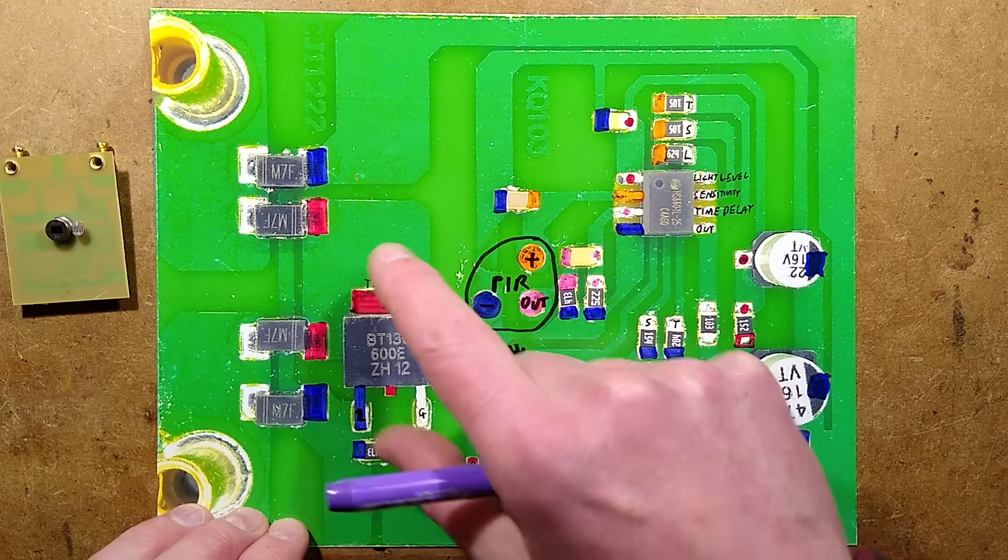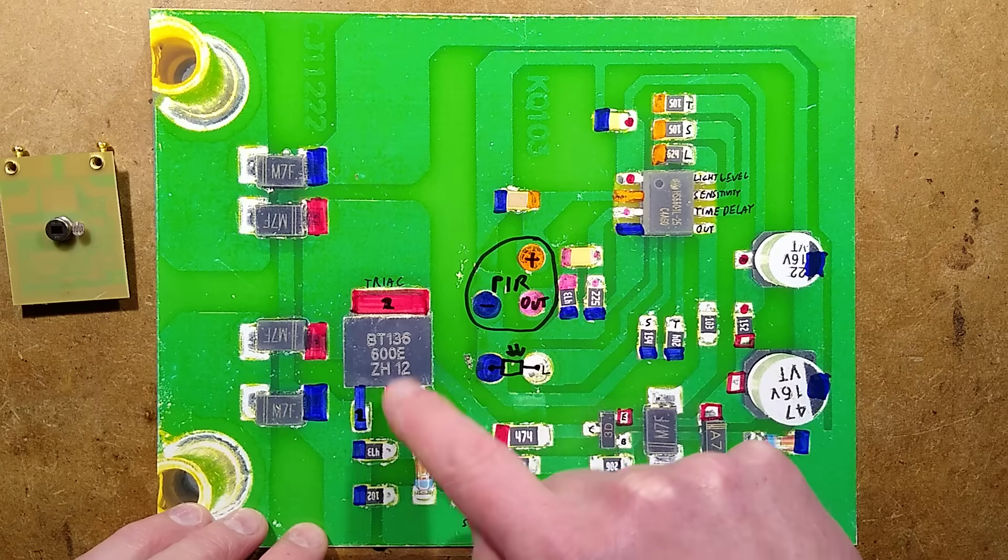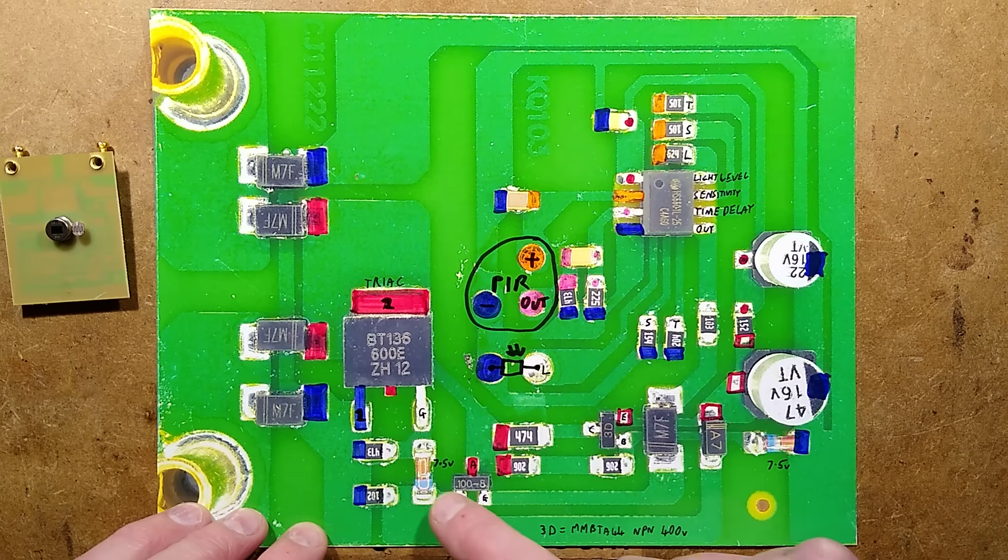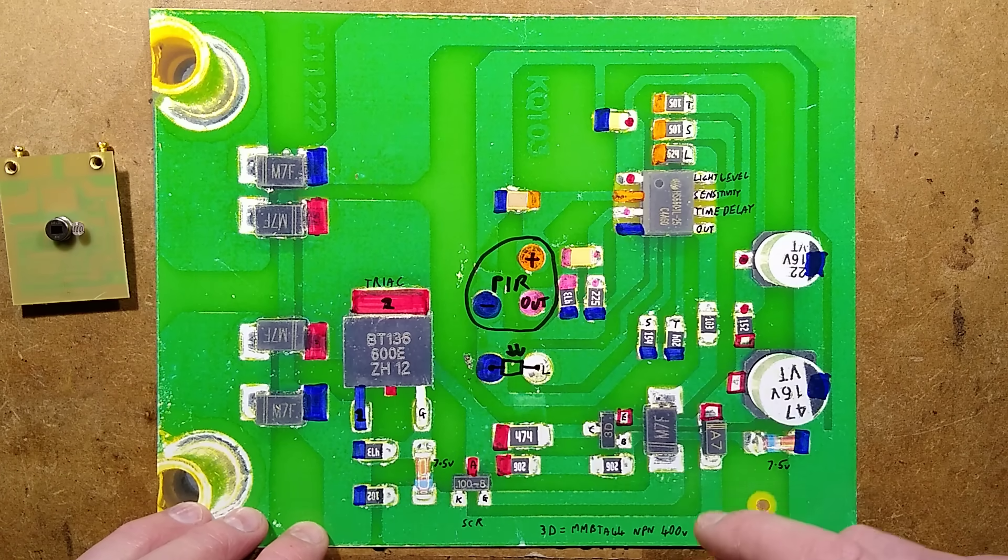This starts off with a bridge rectifier. I thought this was going to be a thyristor, but it's actually a triac. And the triac is switched by a thyristor. And there's a 7.5V zener diode to cause a voltage threshold before the triac turns on. And that's how it keeps itself powered.